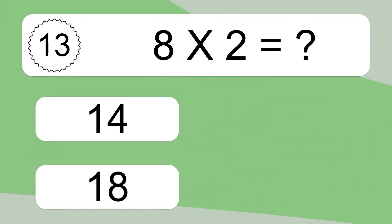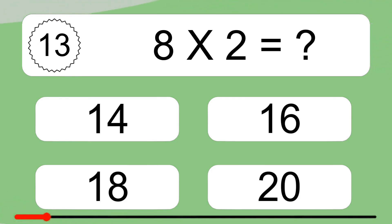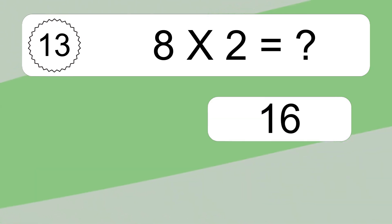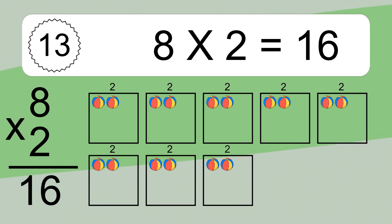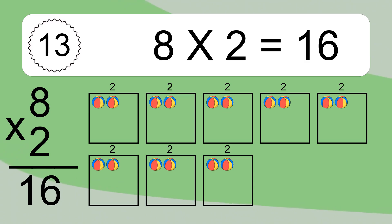8 times 2 equals what? 8 times 2 equals 16. We have 8 boxes, and each box has 2 colorful balls inside. If you count all the balls in all the boxes together, you will have 8 times 2 balls. This equals 16 balls.